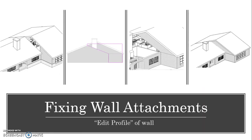Another problem I ran into was the gable end of the walls. The geometry that was joined to the roof stopped where the exterior wall stopped, and I had to edit it again and customize that wall to extend it through the opening. Using YouTube again, I was able to construct the rest of the face using the edit profile button. I also did the same for the gable end of the wall on the right side of the house.